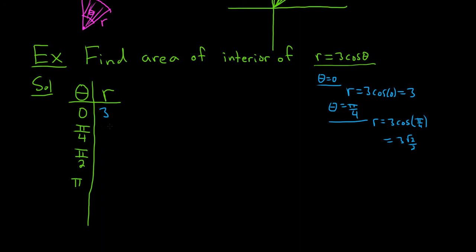Let's put it over here, 3 root 2 over 2. When theta is equal to pi over 2, we get R equals 3 cosine of pi over 2. Cosine of pi over 2 is 0, so we just get 0. So we're at 0.